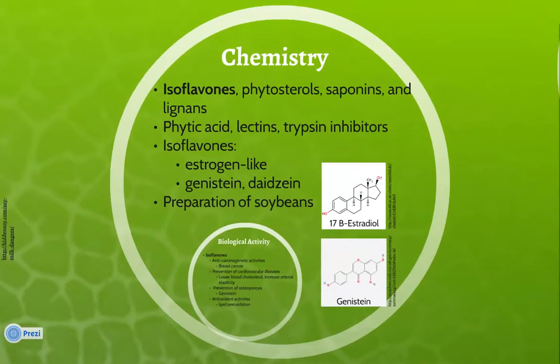Soybeans are composed mainly of isoflavones, phytosterols, saponins, and lignins. Other components include phytic acid, lectins, and trypsin inhibitors. Isoflavones are the compounds in soybeans that are most associated with protection against chronic diseases. They are found in soy proteins and are estrogen-like compounds. Genistein and daidzein are the main soy isoflavones.